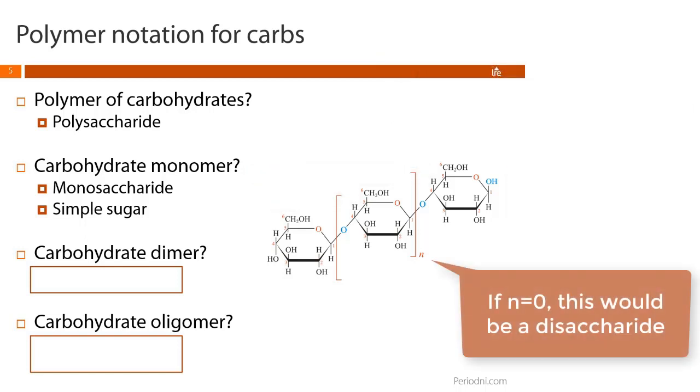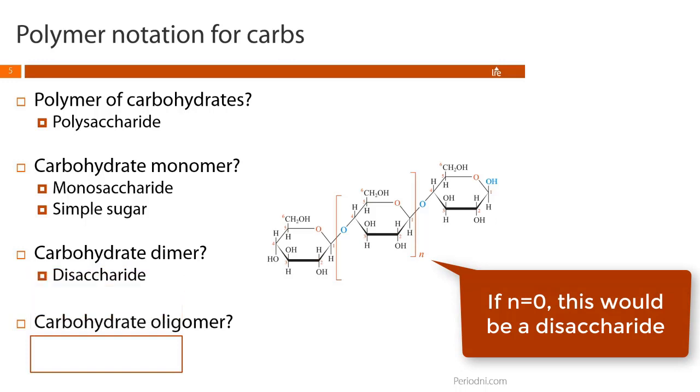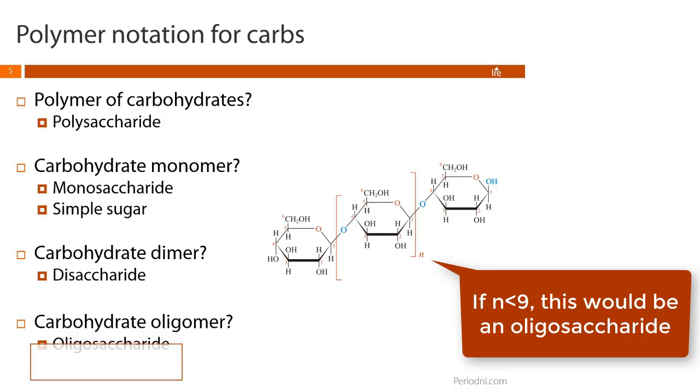As you might have guessed, a carbohydrate dimer is a disaccharide, and a carbohydrate oligomer would be an oligosaccharide.